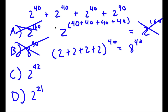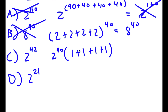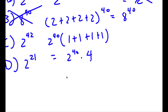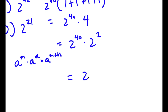Now for C, you first start by factoring out 2 to the power of 40. So now you have 2 to the power of 40 times (1 plus 1 plus 1 plus 1), because 2^40 divided by 2^40 is 1. Simplifying inside the parentheses: 1 plus 1 is 2, 2 plus 1 is 3, 3 plus 1 is 4. So I have 2^40 times 4. Now 4 is the same thing as 2 squared, so I have 2^40 times 2^2. Using the rule a^m times a^n equals a^(m+n), that gives 2^(40+2), and 40 plus 2 is 42, so I have 2 to the power of 42.